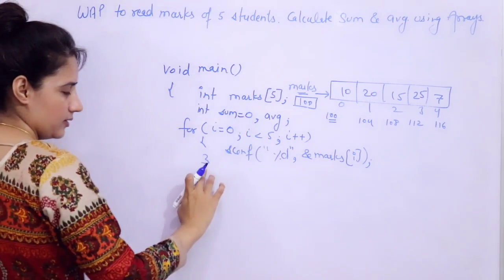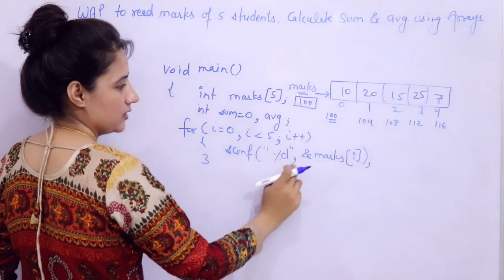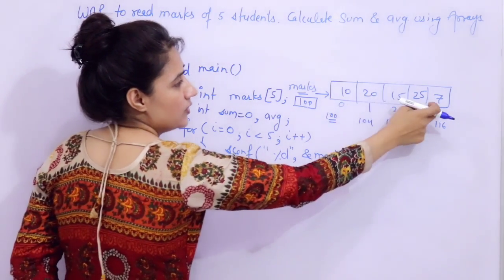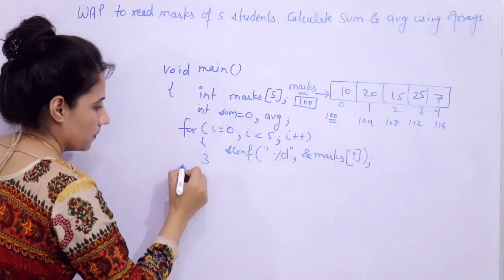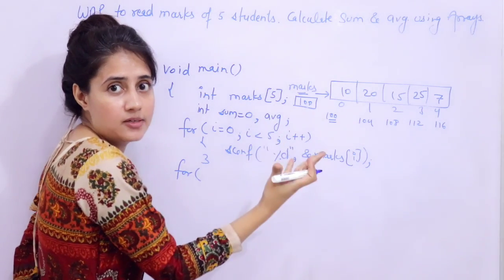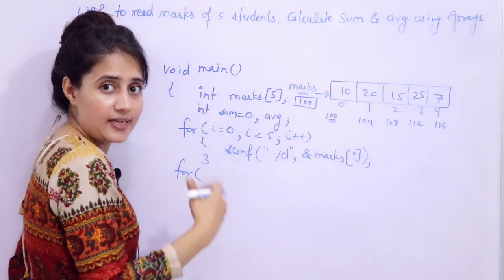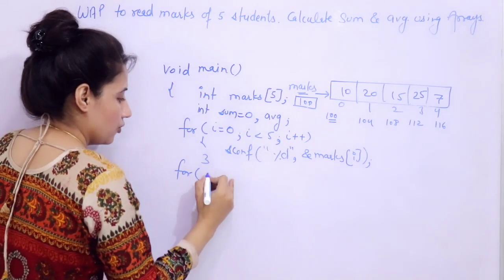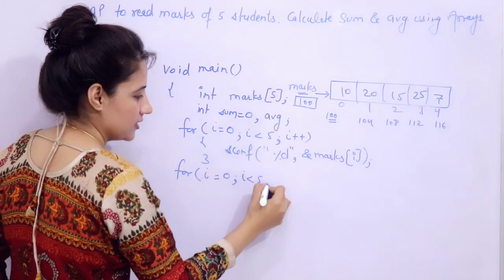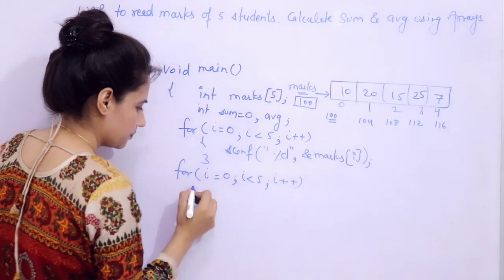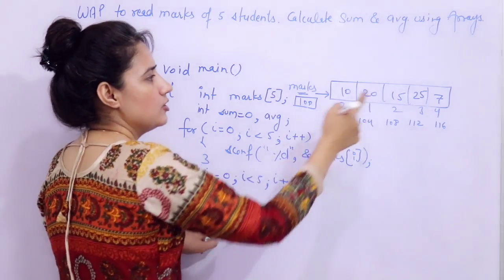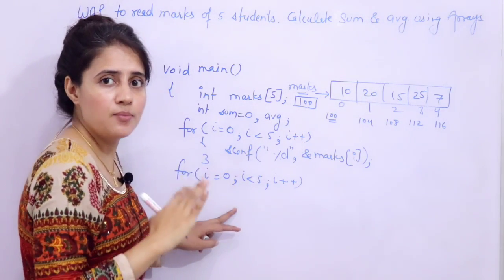Now, how to do the sum of these elements? Obviously to do sum, we first need to access these elements, and while accessing them we will do the sum. So for accessing, one more for loop from 0 to less than 5 with i++. And here we are not going to print these — we are just doing the sum of these elements.